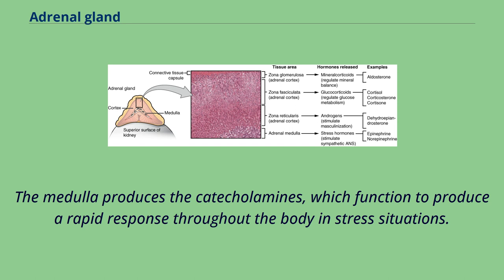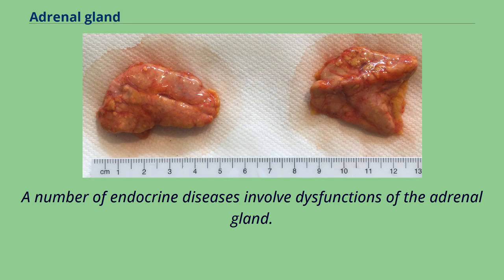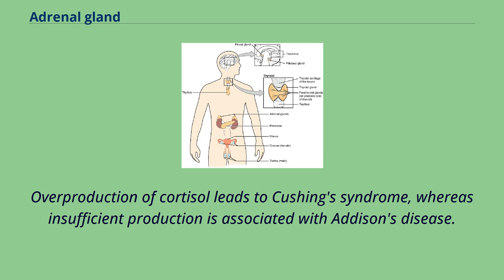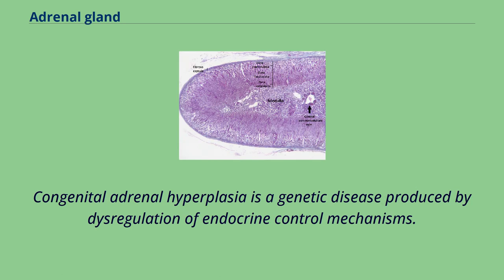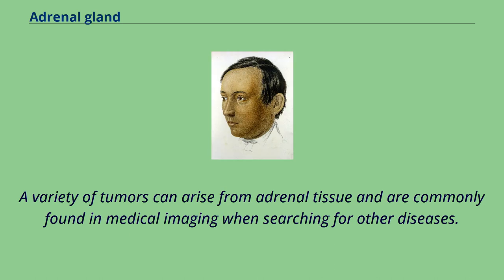The medulla produces the catecholamins, which function to produce a rapid response throughout the body in stress situations. A number of endocrine diseases involve dysfunctions of the adrenal gland. Overproduction of cortisol leads to Cushing's syndrome, whereas insufficient production is associated with Addison's disease. Congenital adrenal hyperplasia is a genetic disease produced by dysregulation of endocrine control mechanisms. A variety of tumors can arise from adrenal tissue and are commonly found in medical imaging when searching for other diseases.